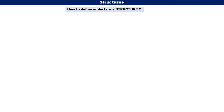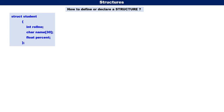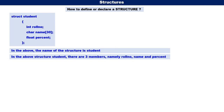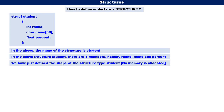How to define or declare a structure? The name of the structure is Student. There are three members: the first is roll number of type integer, the second is name which is an array of characters (up to 30 characters), and the third is percent of type float. This is very important — we have just defined the shape of the structure type student. No memory is allocated. We have defined the name, the number of members, and the data type of each member. No memory is allocated.